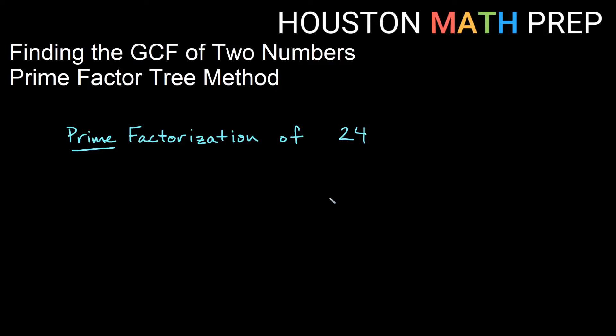Hello everyone, Houston Math Prep here, making sure that you can find the greatest common factor of two numbers. We're going to use the prime factor tree method in this one. If we're finding the prime factorization of a number, that will always be unique, so it doesn't matter which order we find those factors. If they're prime numbers, we can write them down and they'll always be the same.